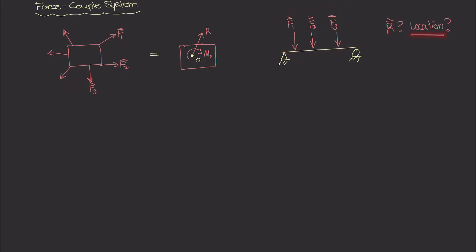The first part is pretty easy — we can find the resultant by just summing the forces in the y-direction. So the resultant is going to be F1 plus F2 plus F3. This just gives us the magnitude of R. Intuitively, we can see that these forces are acting downwards, so the resultant is going to be some value which acts downward. The resultant is just a sum of these forces.